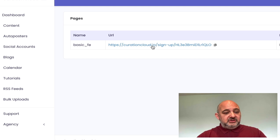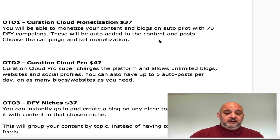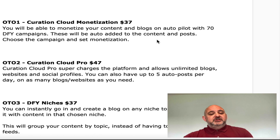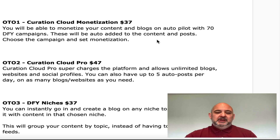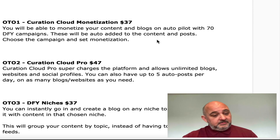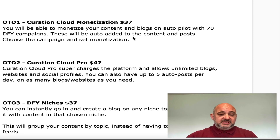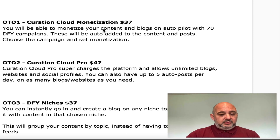Now I'm going to talk about the funnel and what to buy and what not to buy. Here we are on the funnel for Creation Cloud 2021. The first upsell is the Creation Cloud monetization — this was offered on the first launch, so if you already got this, you do not need it again. This is the underground affiliate system; if you already have that, you don't need this. It allows you, through an API, to monetize your content and blogs via Creation Cloud. That's $37.